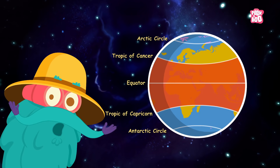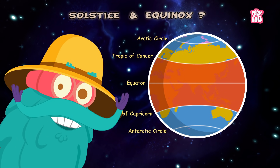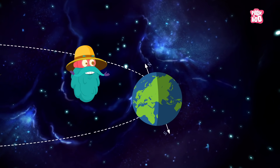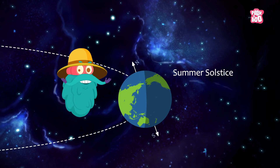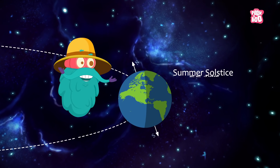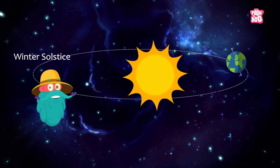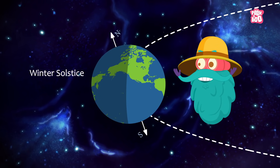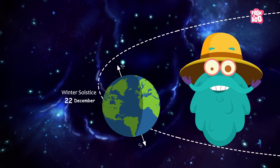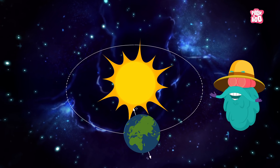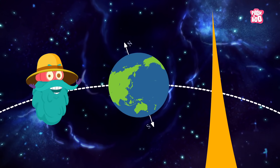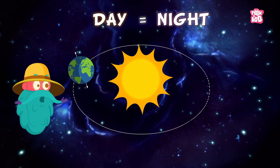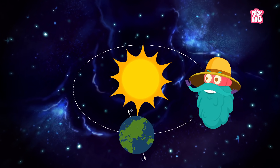Did those words just bounce off your head — solstice and equinox? The time of the year when the sun passes overhead the farthest north is known as the summer solstice, which usually takes place on the 22nd of June. The winter solstice is when the sun passes farthest south of the equator, which usually happens on the 22nd of December. An equinox happens either of the two times each year when the sun crosses the equator and day and night are approximately of equal length almost everywhere on earth. Mark the dates again!